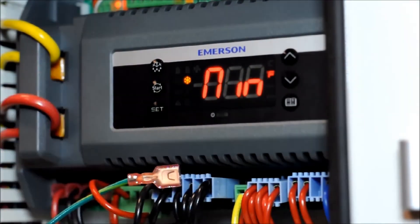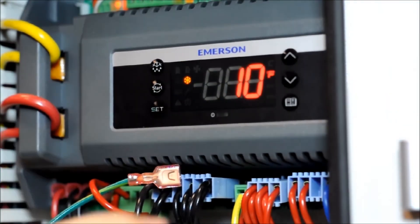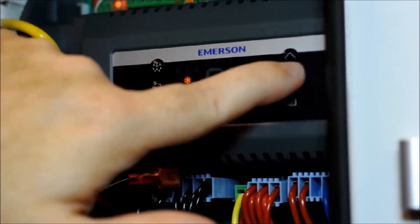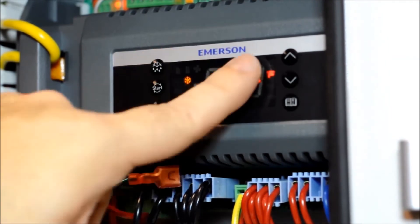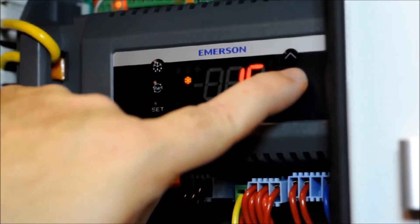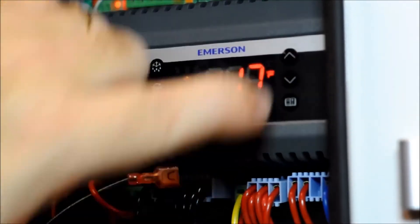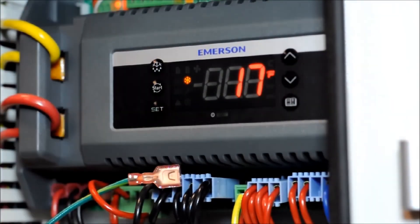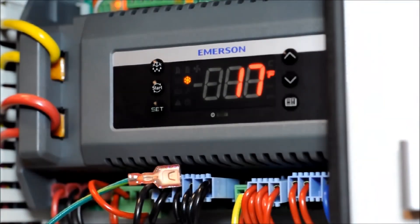Once you're in the real-time clock menu, now you'll be able to set things like the minute, hour and the day. So the first parameter that comes up is minute. Go ahead and hit the set button to enter that parameter and then use the up and down arrow buttons to adjust the time. Hit set to accept it. Do the same thing for hour. Hit set button to enter the hour parameter and use the up and down arrow buttons to set the time. Now the time is in 24 hour time. So anything that's above 12 you just subtract 12 to get the time of day. So 17 means 5 p.m.